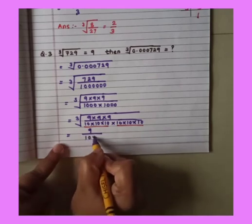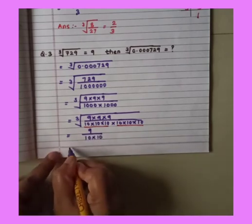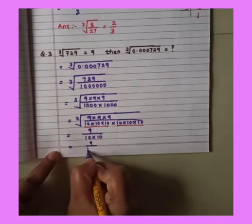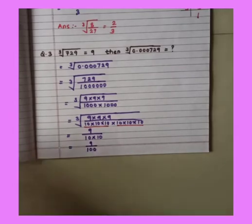So it is 10 multiplied by 10. So we will get answer 9 upon 100. Okay students.